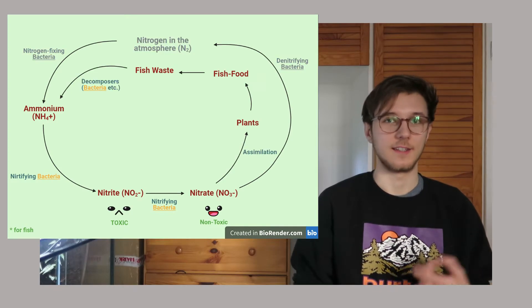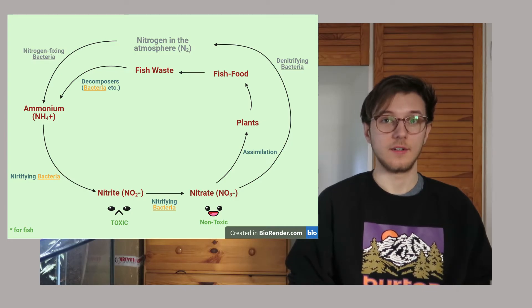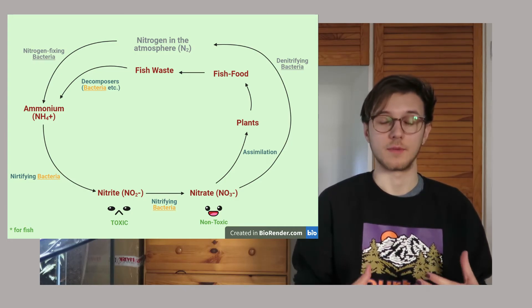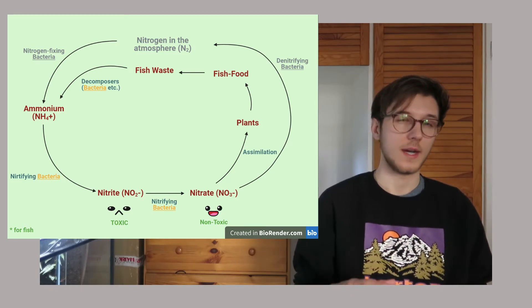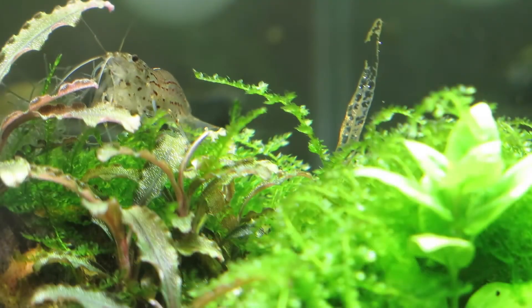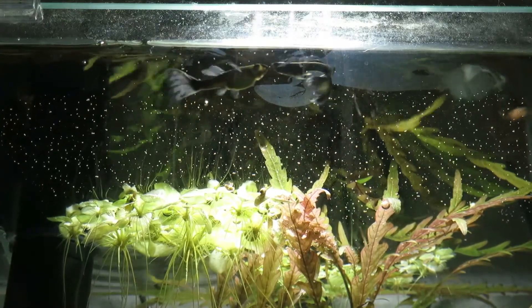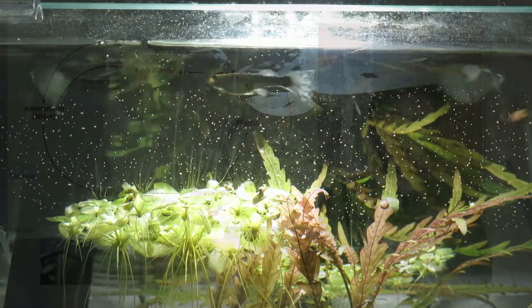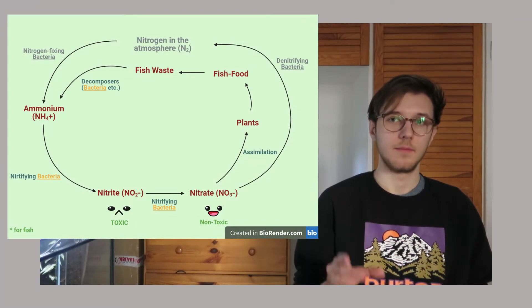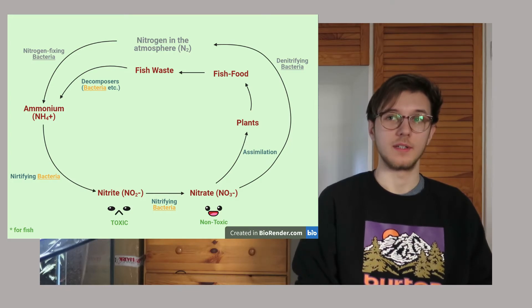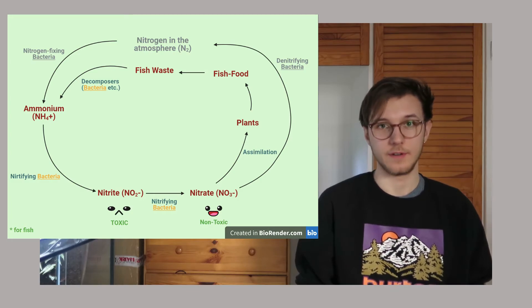In your tank, you have nothing really to do with atmospheric nitrogen. What you have is fish waste, or maybe dying leaves of plants or leftovers of food, and this breaks down and will be turned into ammonium again by some decomposers in the aquarium. These are mostly also bacteria, but different types of bacteria.